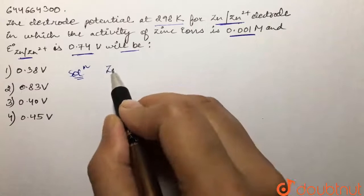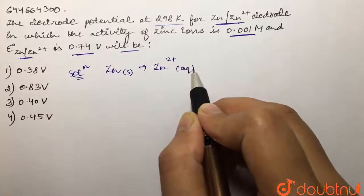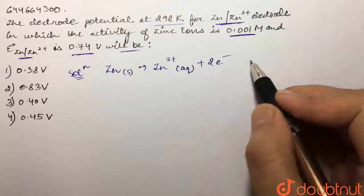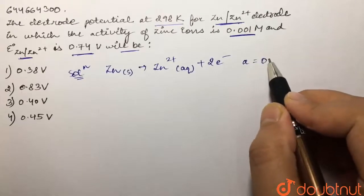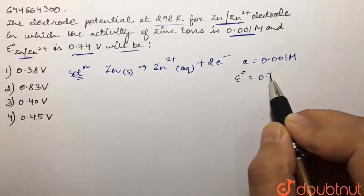First of all, we're going to write the reaction. We have zinc that is going to convert into zinc two plus aqueous, and then there would be removal of these two electrons. The activity of zinc is given to us as 0.001 molar, and E naught value for this is 0.74 volt.